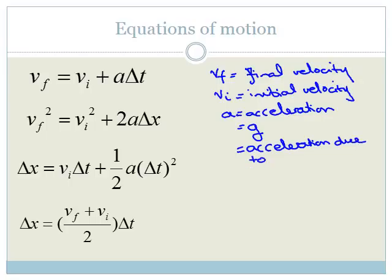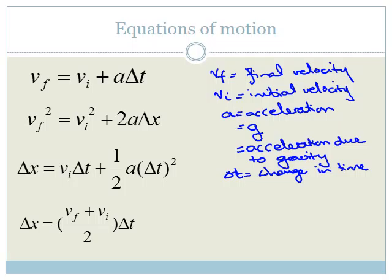On Earth, we use 9.8 — I say 'use' because it's close to the actual amount, and the amount varies depending where you are on Earth. Delta T equals the change in time. So that's VF equals VI plus A delta T. We've also got VF squared equals VI squared plus 2A delta X, where delta X is the change in displacement. We've got delta X equals VI delta T plus a half A delta T squared, and delta X equals VF plus VI over 2 times delta T.